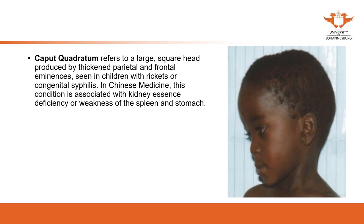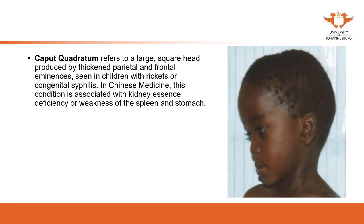The next one is caput quadratum — a square-shaped head. The top of the head is flat, and the sides of the forehead are protruding, so it looks square. This happens mostly in congenital syphilis. In Chinese medicine, this is also because of the abnormal development of the kidney essence, since the head is where the brain and marrow reside, both related to the kidney.